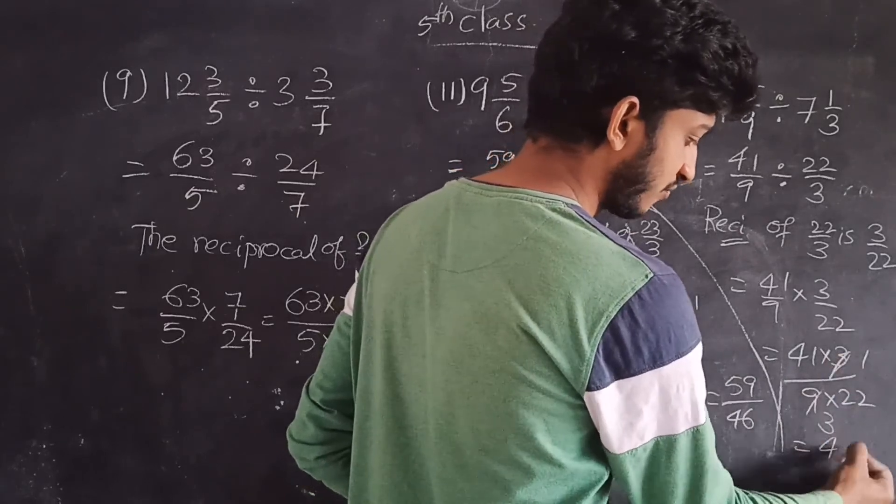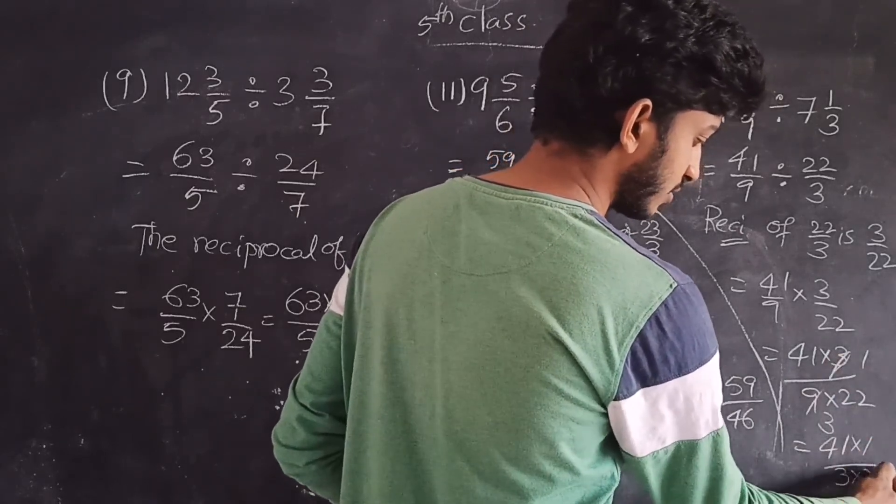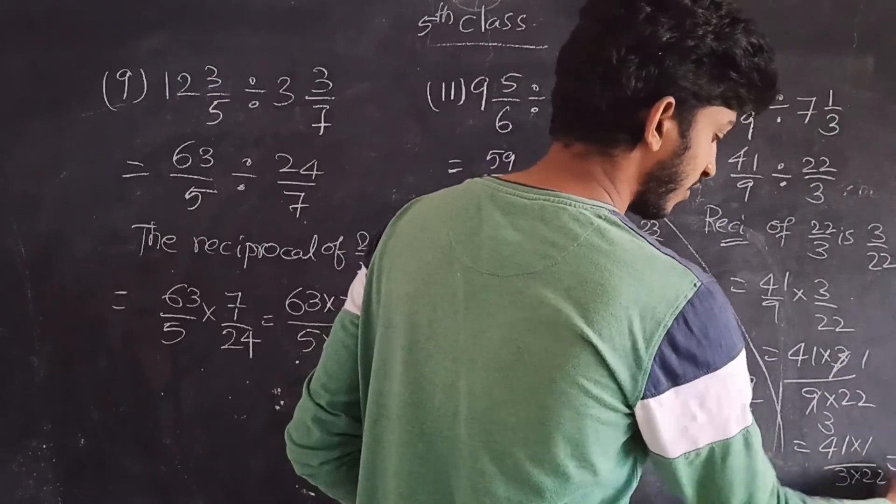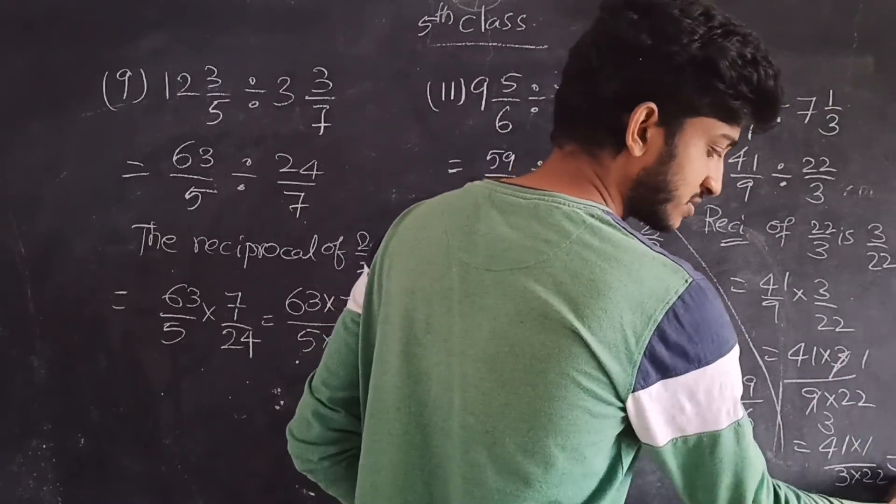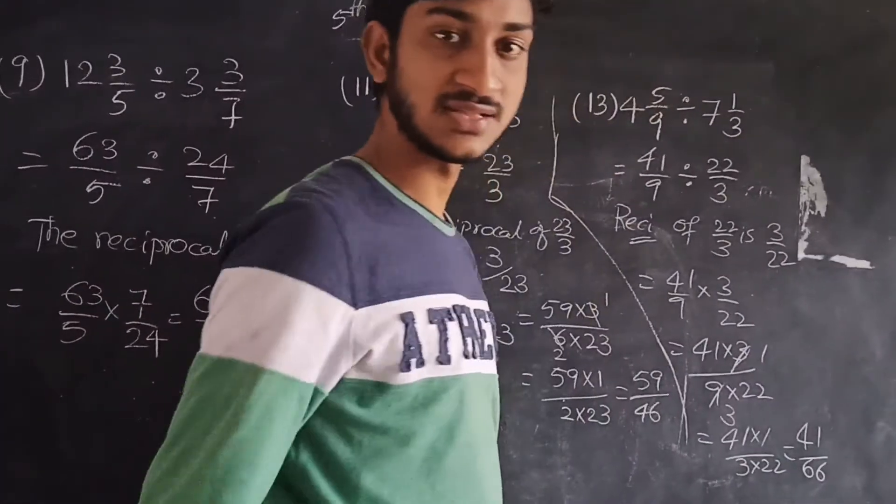That is equal to 41 into 1 by 3 into 22. That is equal to 41 by 3 times 22 is 66. This is the answer.